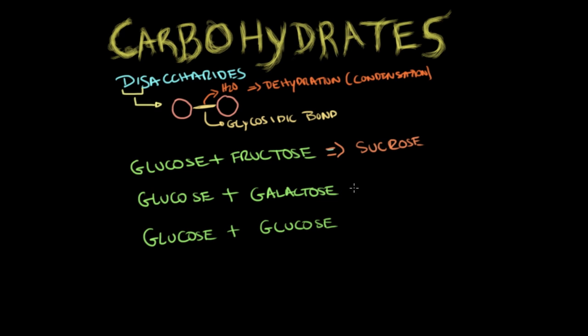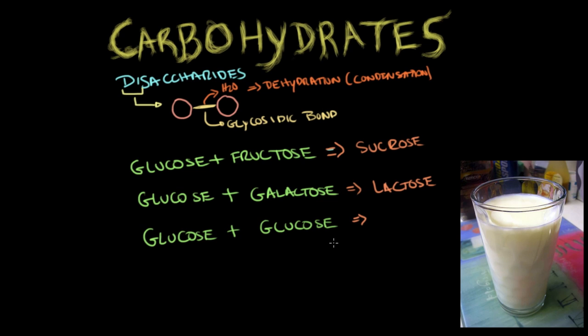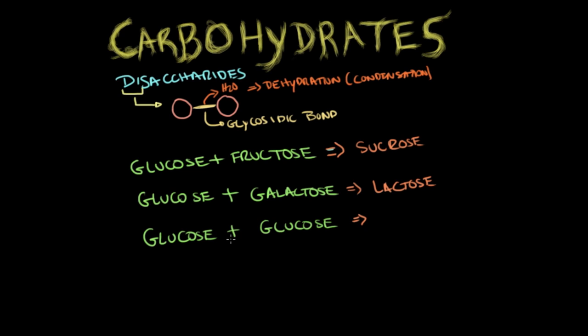When glucose and galactose combine, you form lactose, a sugar found in milk. Some people have lactose intolerance because they're not able to break it down and convert it to energy. When two glucose molecules come together, the resulting disaccharide is called maltose.